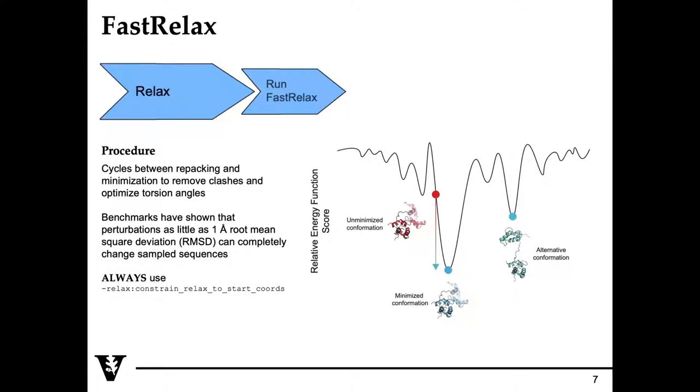It is important to note that Rosetta fast relax can substantially alter your native or starting protein backbone, and design benchmarks have shown that changes of little less than one angstrom RMSD can change sampled sequence space.